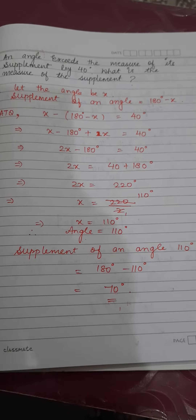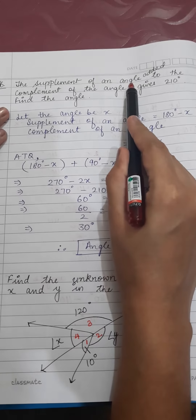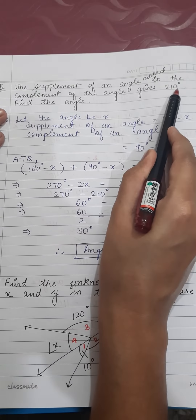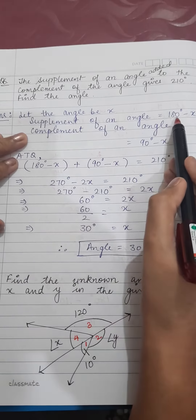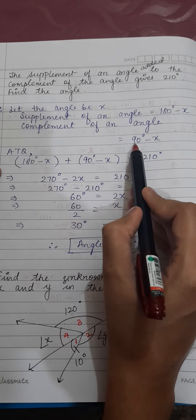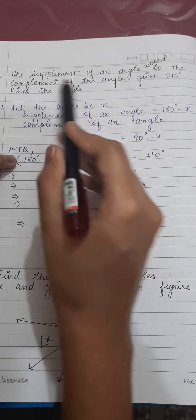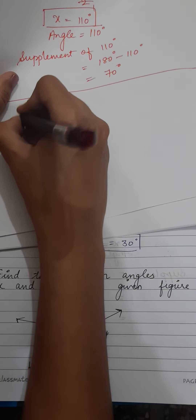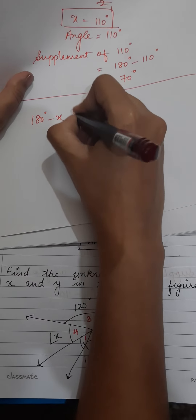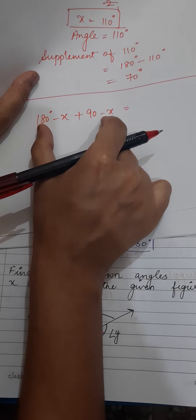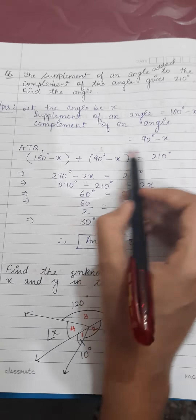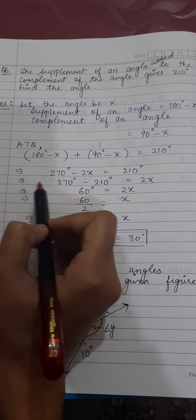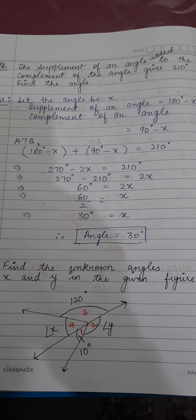Now let's move to question number 6. Supplement of an angle added to the complement of the angle gives 210. Let the angle be x. The supplement is 180 - x and the complement is 90 - x. According to the question: (180 - x) + (90 - x) = 210.